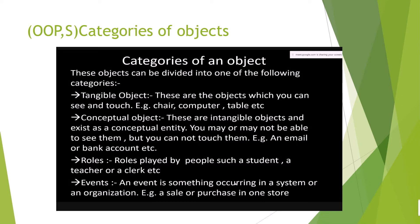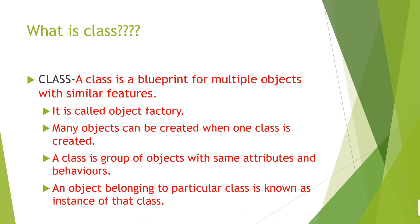An event is something that occurs in a system or organization, such as a sale or purchase in a store. Events include weddings, engagements, or other functions organized. When we go to a store and make a purchase, that is called an event — it occurs at a particular destination. When we go to a bank and take out money, an event occurs, and the bank account is a conceptual object.